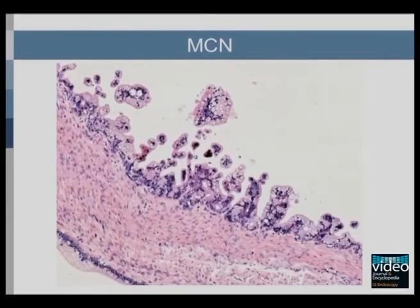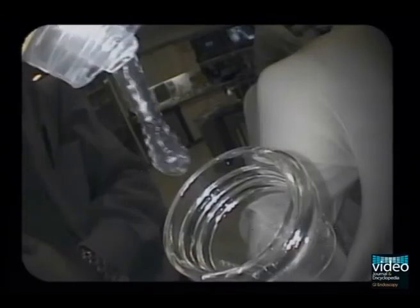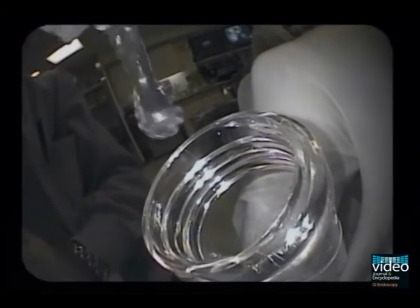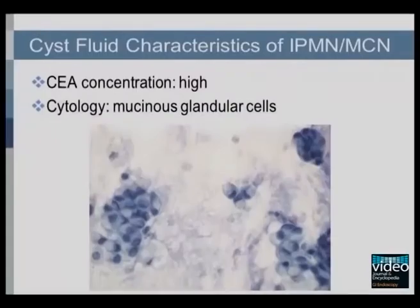Histologically, mucinous cystic neoplasms are characterized by ovarian-type stroma, composed of densely packed spindle cells with sparse cytoplasm and uniform elongated nuclei. The presence of ovarian-type stroma is a requirement for diagnosis. EUS FNA of an IPMN or mucinous cystic neoplasm may reveal thick mucinous cyst fluid. The fluid is usually high in CEA concentration, and cytology may reveal mucinous glandular cells.